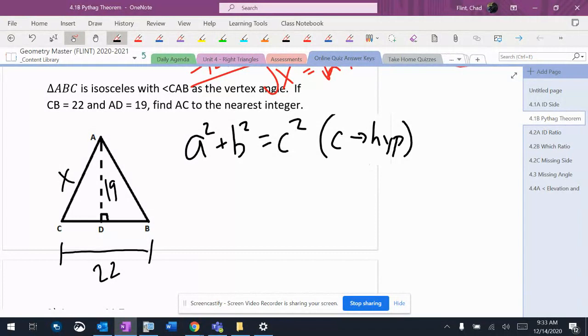A couple things to remember. Number one, the Pythagorean theorem only works on right triangles. So if I have a right triangle there, it's going to be yellow because the isosceles triangle is not a right triangle.